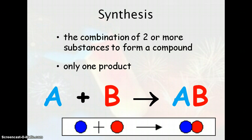Now we're going to start talking about different types of chemical equations. The first type is synthesis. Synthesis is the combination of two or more substances to form a compound. The big hint here is that there's only going to be one product. So you have A plus B yielding AB, like a blue molecule plus a red molecule equals a molecule that has blue and red atoms combined.